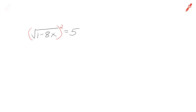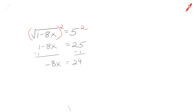In order to get the square root radical off, you square both sides. That leaves you with what's underneath the square root radical, so you have 1 minus 8x equals 25. Then subtract 1 from both sides — we're just solving a regular equation now. Negative 8x equals 24. Divide both sides by negative 8 and you get x equals negative 3.